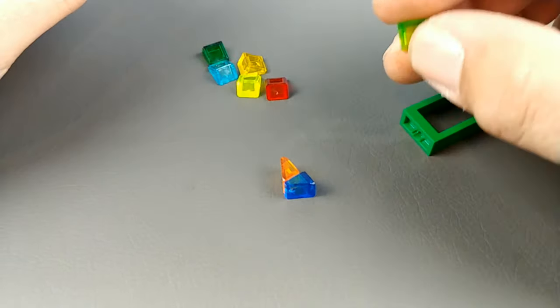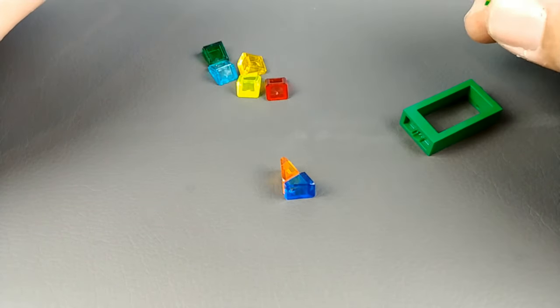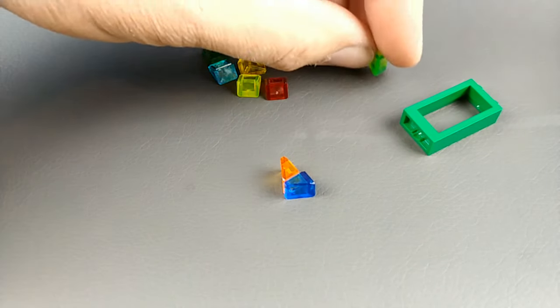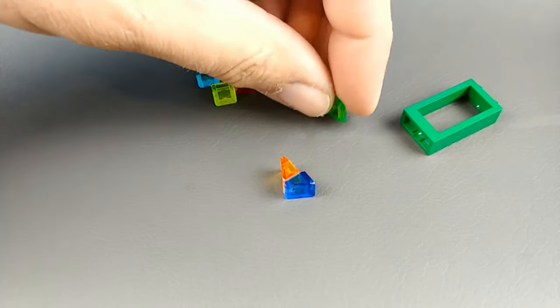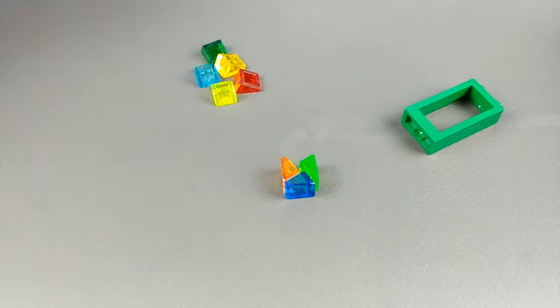You always want the smooth long slope to be on the outside. Again we're gonna take this piece and we're putting him down like this with the stud again facing the inside.